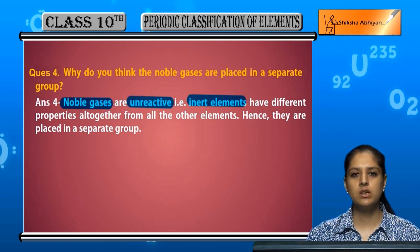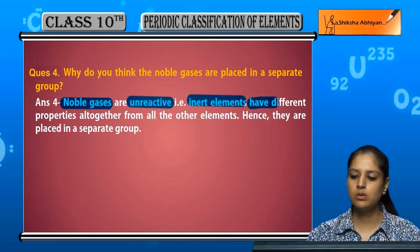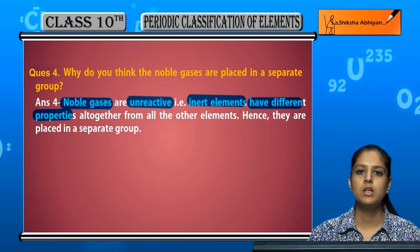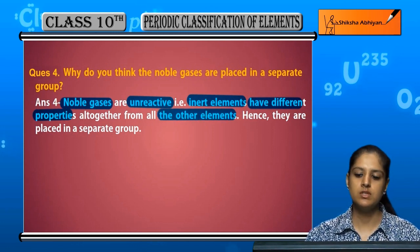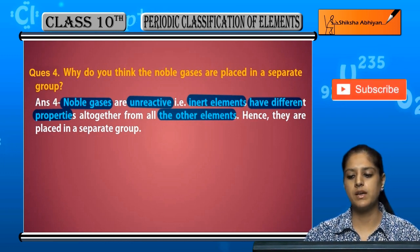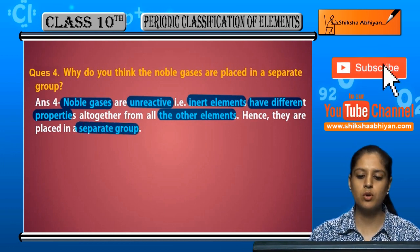Unreactive or inert elements are different from other elements, so because they are different from other elements, they are placed in a separate group.